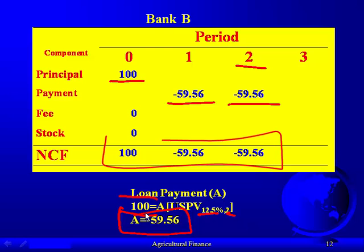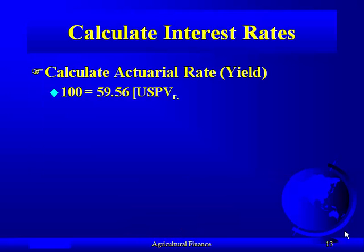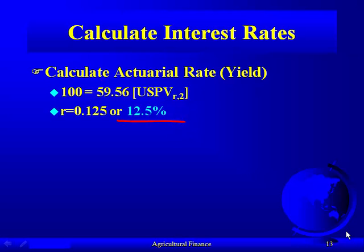Looking at the net cash flows, we receive $100 today and then pay $59.56. To calculate the actuarial rate, we're finding the rate that makes the present value of cash inflows equal to the present value of cash outflows. There are two payments of $59.56, and comparing the equations, the answer is 12.5%. So the actuarial rate is 12.5%.